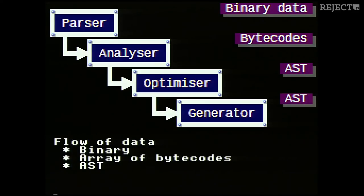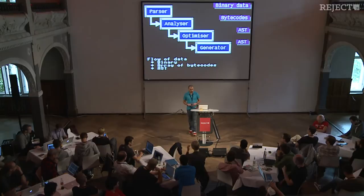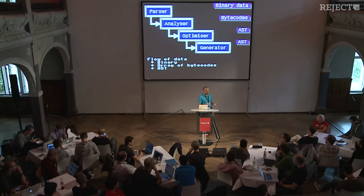If I had to rewrite it now, I probably wouldn't go for an AST because it's very complicated. My idea was — maybe I was a bit naive — but I was thinking if I have a JavaScript AST, I might be able to reuse optimisation passes developed for other projects, in particular ESMangle, which is a JavaScript minifier that also does some optimisation. But it turned out it wasn't such a great idea. At the end, the AST goes through the generator and we get JavaScript code that is ready to be run and played.